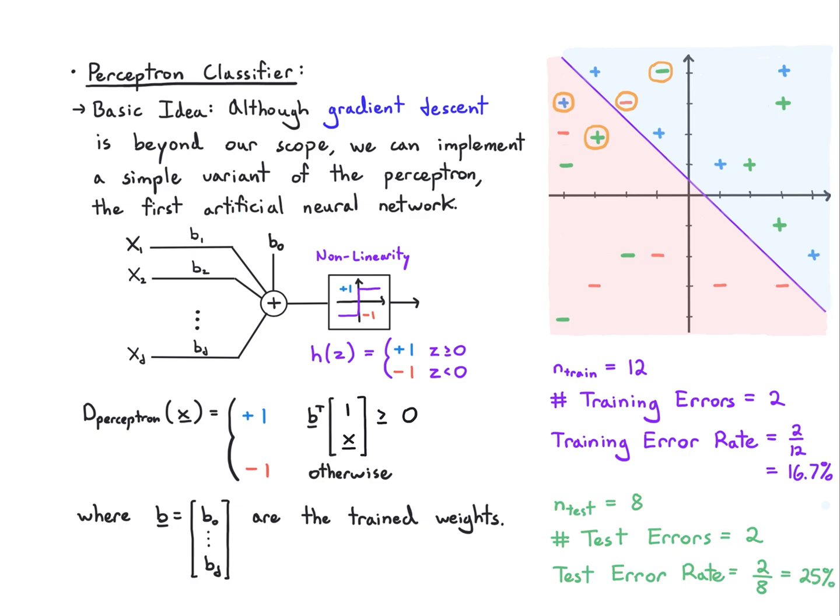One important caveat: these illustrations are very simple 2D examples and you shouldn't conclude that the nearest neighbor rule is better in general just because it did better on this particular test set. Depending on your scenario, any one of these decision rules might give you the best performance — it's something you have to try out and see.